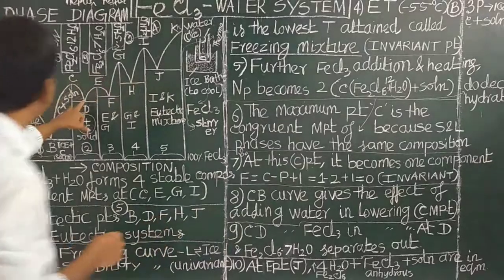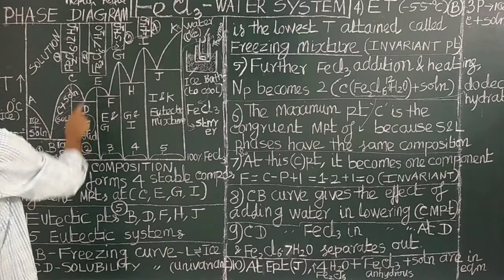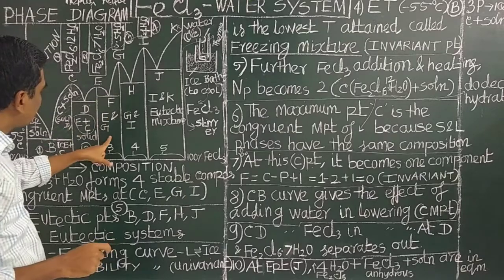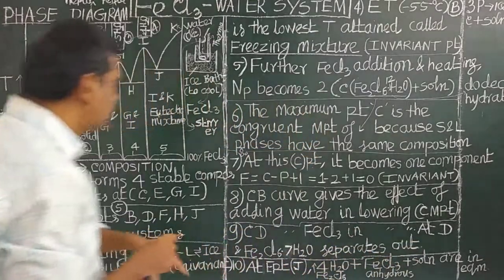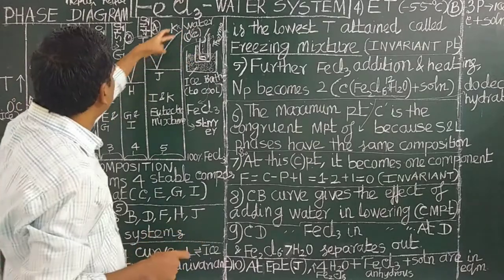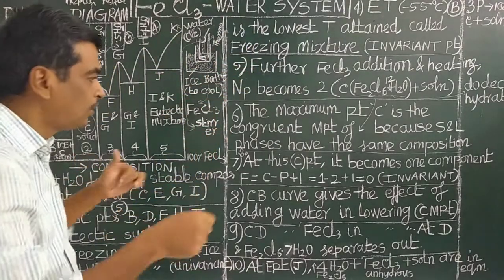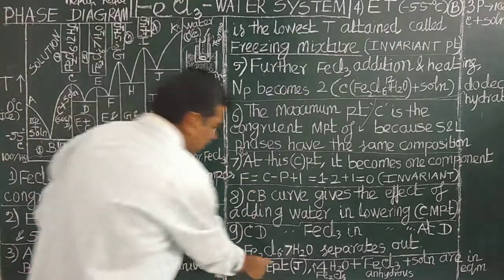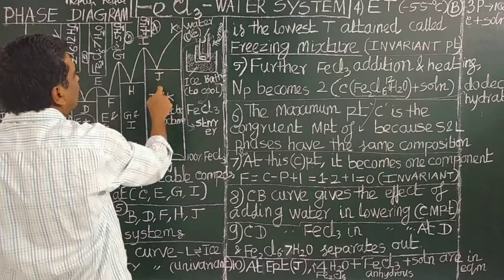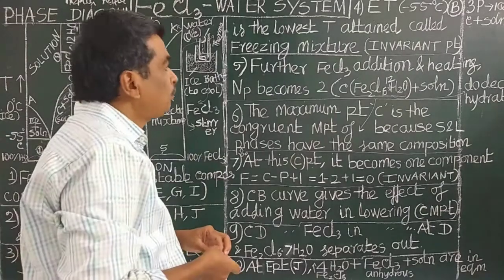At point D, compound E separates out, so E and C are both solid. At point S, pentahydrate crystallizes out. At point K, only anhydrous ferric chloride — 100% — is present, because at the high temperature all water molecules are lost; ferric chloride is in the anhydrous form. At eutectic point J, the two neighboring compounds plus solution are present, and below this the eutectic mixture is the compound and anhydrous ferric chloride.